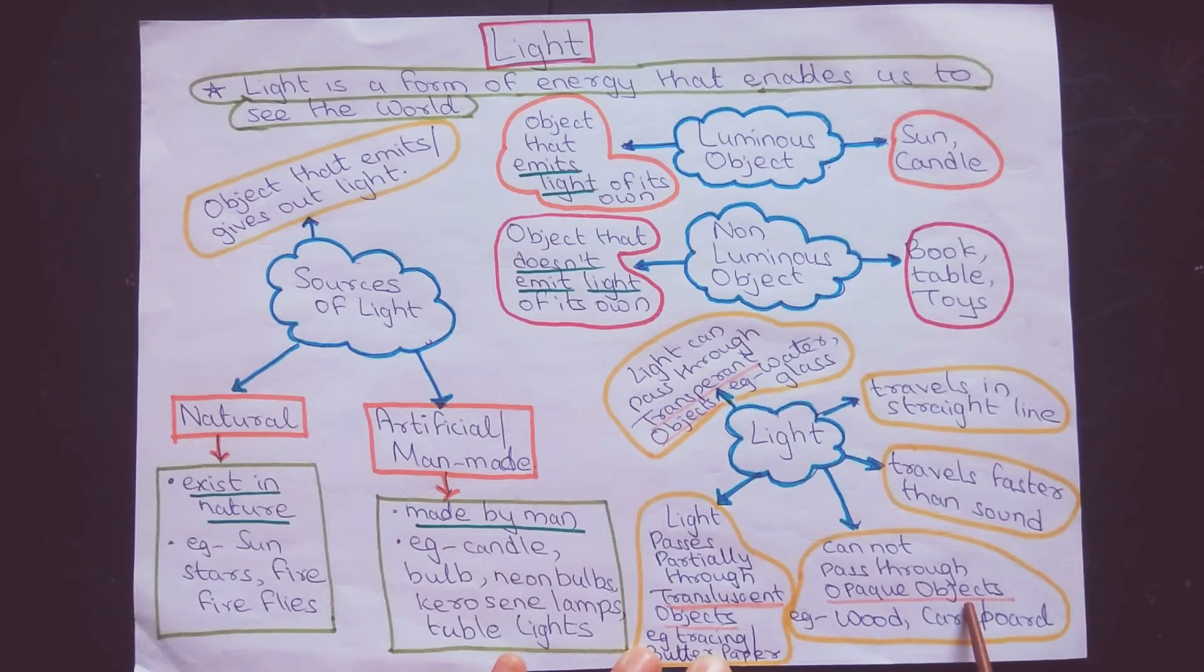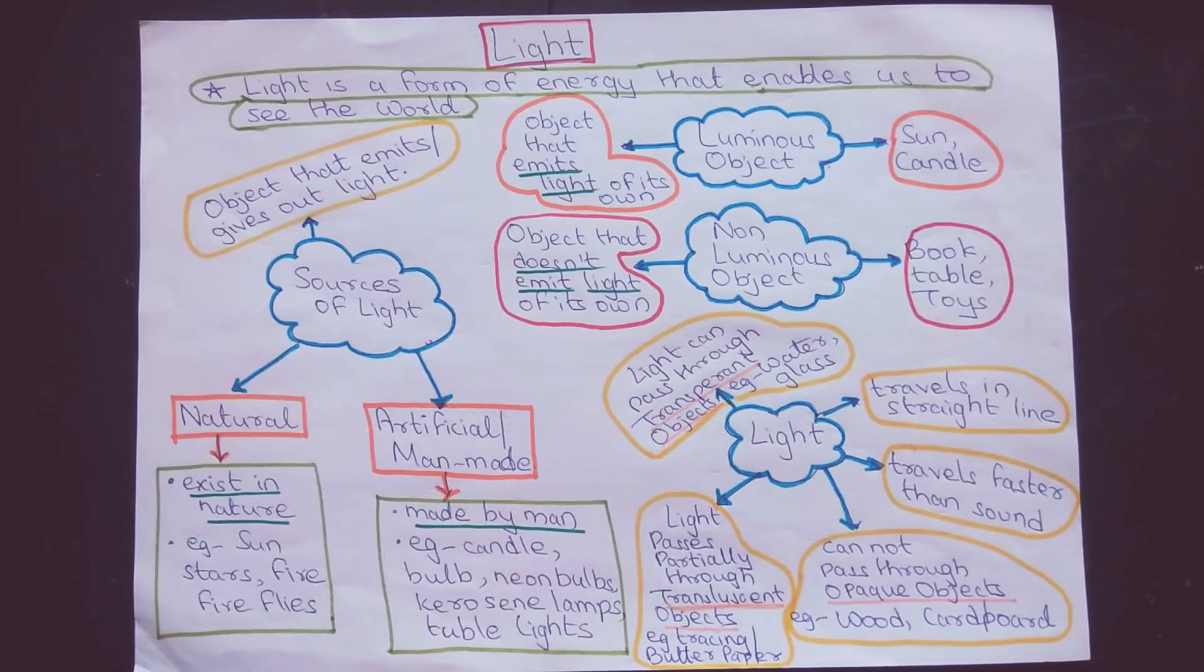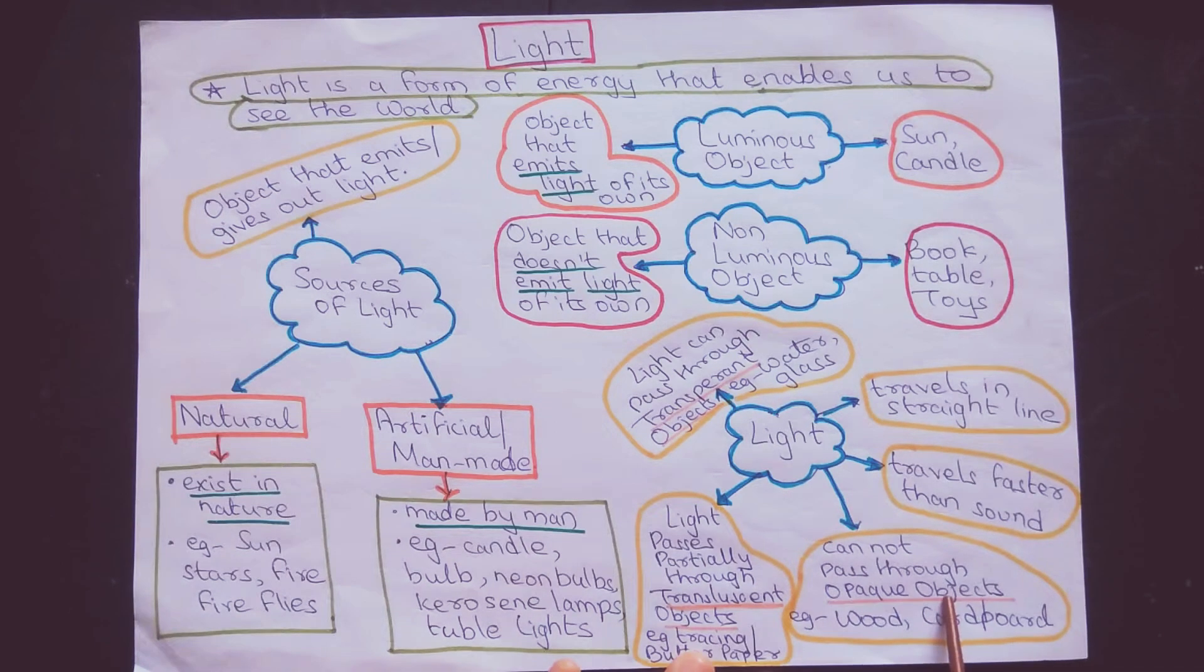Light cannot pass through opaque substances. That means the objects which do not allow light to pass through them are known as opaque substances. Examples include wood and cardboard.